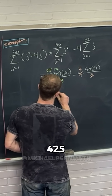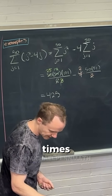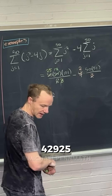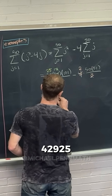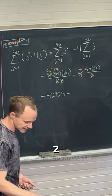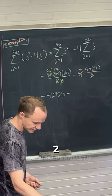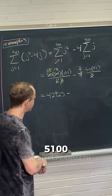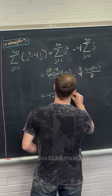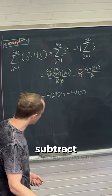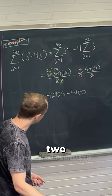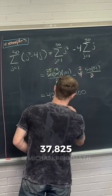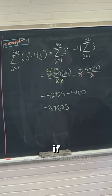425 times 101 is 42,925. Then 2 times 50 times 51 gives 5,100. Subtracting: 42,925 minus 5,100 equals 37,825. So 37,825 is the answer we get when we add up all those numbers.